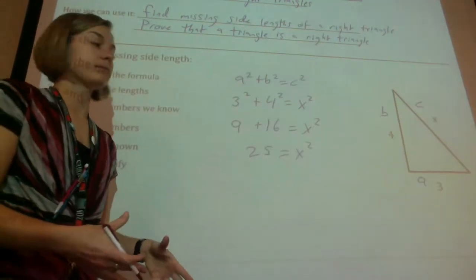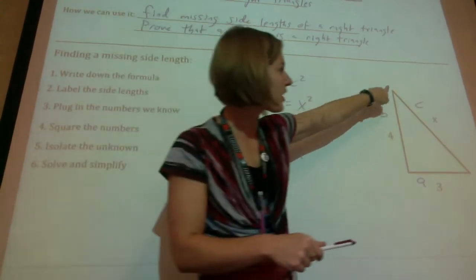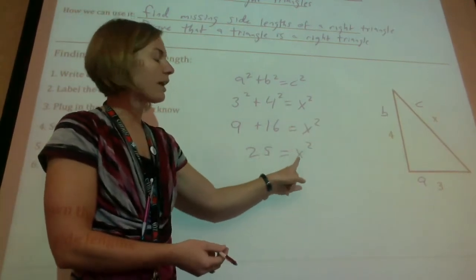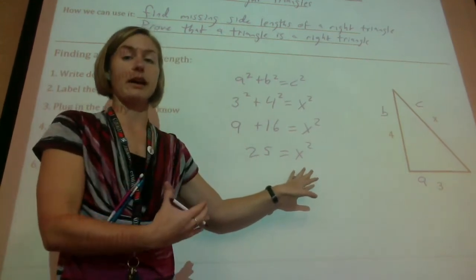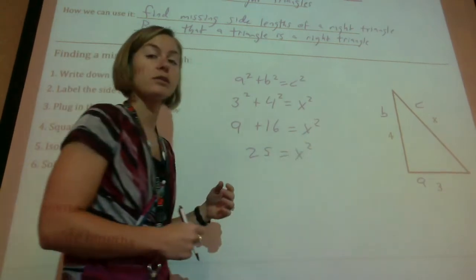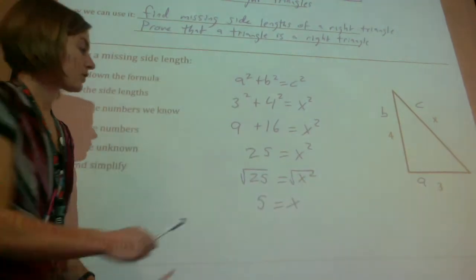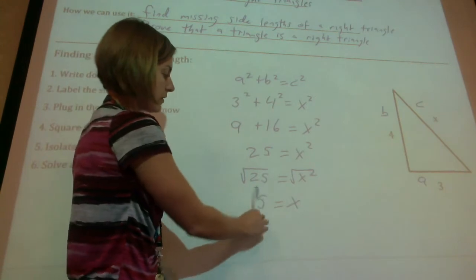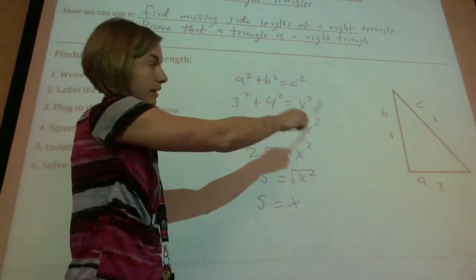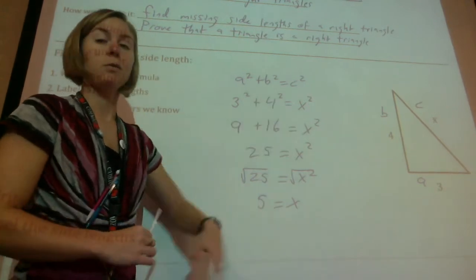We're almost done. If you get 25 as your answer, always make sure that makes sense. Does it make sense that this side length is 25? No — we don't want X squared, we want just regular X. To get rid of squaring, you square root it. So we square root both sides: the square root of 25 is 5, and square root of X squared is just X. So that missing side length is 5.